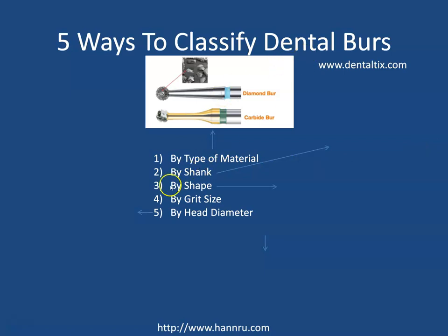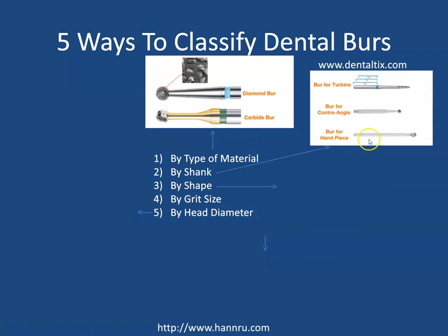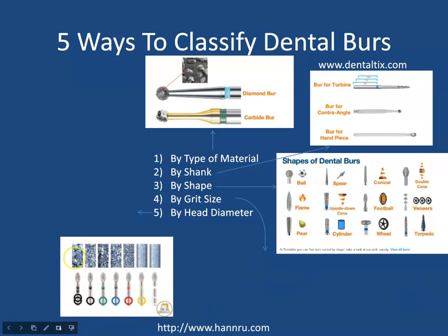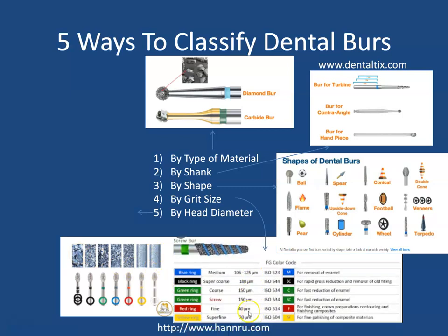Burrs can be classified by the type of material — it could be diamond or carbide, which we'll cover in a moment. By the shank, which could be smooth or have a locking point at the end. By shapes, such as football or ball shapes. By the grid size, whether the grid is wide or fine. These classifications follow ISO regulatory standards, and there are reference websites where you can find more information on burr classifications.